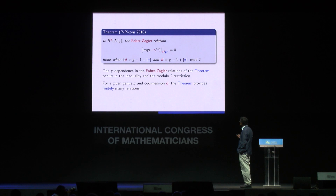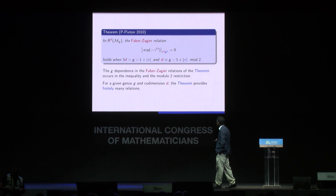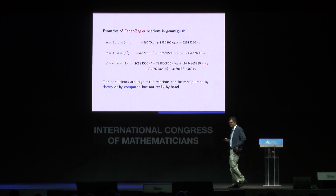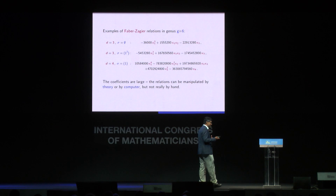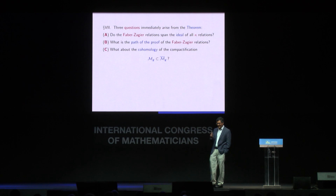For example, in genus 6, plugging in the parameters gives explicit relations whose coefficients are rather large — hard to manipulate by hand, easier by computer. These are the Faber-Zagier relations. The first question for the second half of the talk is: do the Faber-Zagier relations span the entire ideal of all κ relations? The second is: why does the hypergeometric series appear — how are they proven? The third is: what do these interior relations have to do with the full cohomology of the Deligne-Mumford compactification?